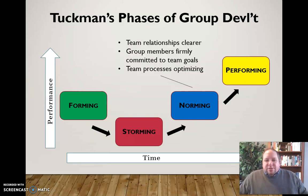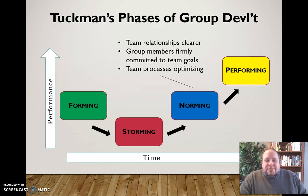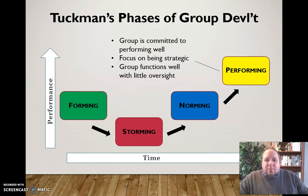In the norming stage, you can see it's on an uptick. Teams start to get clear ideas of relationships between team members and their functions. Group members become more firmly committed to the team goals and are starting to see some progress. Team processes are optimizing — things are running a little more smoothly. Then hopefully you'll move into the performing stage where the group is committed to performing well as a whole.